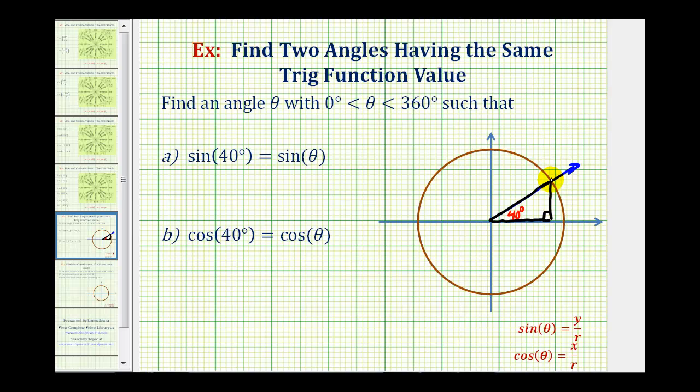This point on the circle we'll call x comma y, where we know both the x-coordinate and y-coordinate are positive because we're in the first quadrant. So we can label the opposite side y, the adjacent side x, and the hypotenuse r for the radius of the circle.